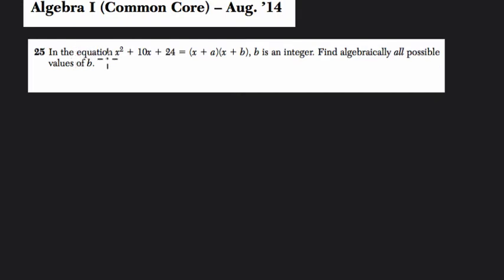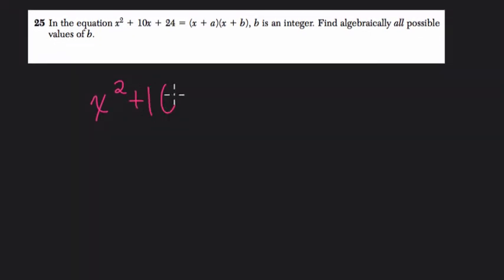Alright, let's read it together. It says, in the equation, and I like to write these things out as I read them, it slows me down. x squared plus 10x plus 24 equals parentheses x plus a times x plus b.